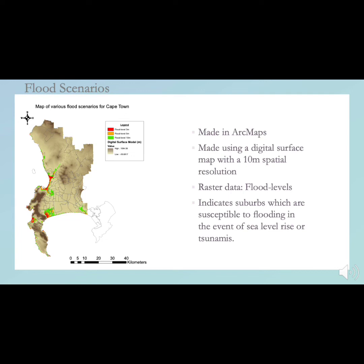Additionally, the outlines of suburbs were included to identify areas of concern. The creation of flood maps is vital in urban planning, as they allow developers and policy makers to identify potential risk zones. Zones affected by flooding can be targeted for improved infrastructure which would withstand flooding and extreme weather. This map can also be used to determine areas not affected by flooding, which could be used to set up evacuation sites.